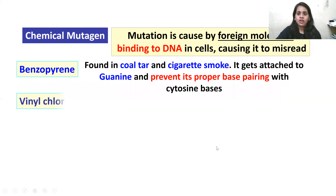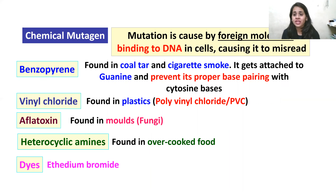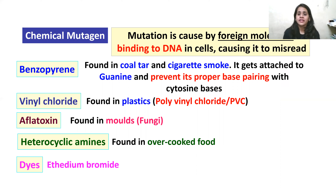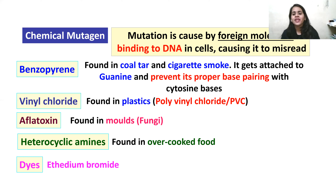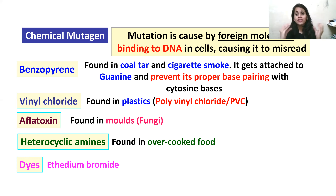For chemical mutagens, the first example is benzopyrene, found in coal tar and cigarette smoke. Those who smoke a lot have a chance of developing cancer because of benzopyrene. When benzopyrene develops in your body, it attaches to guanine and prevents its proper base pairing with cytosine — guanine always pairs with cytosine and adenine pairs with thymine — so there is a misreading that can lead to cancer.